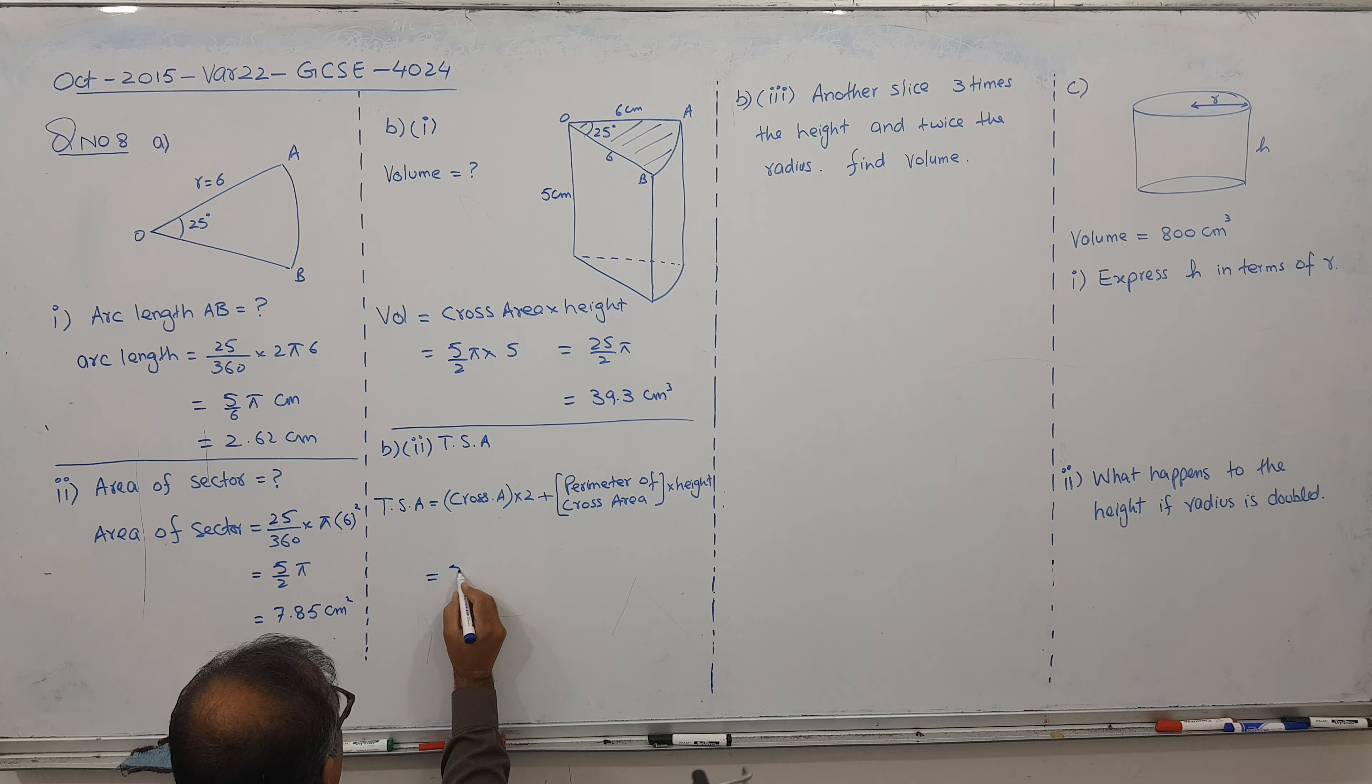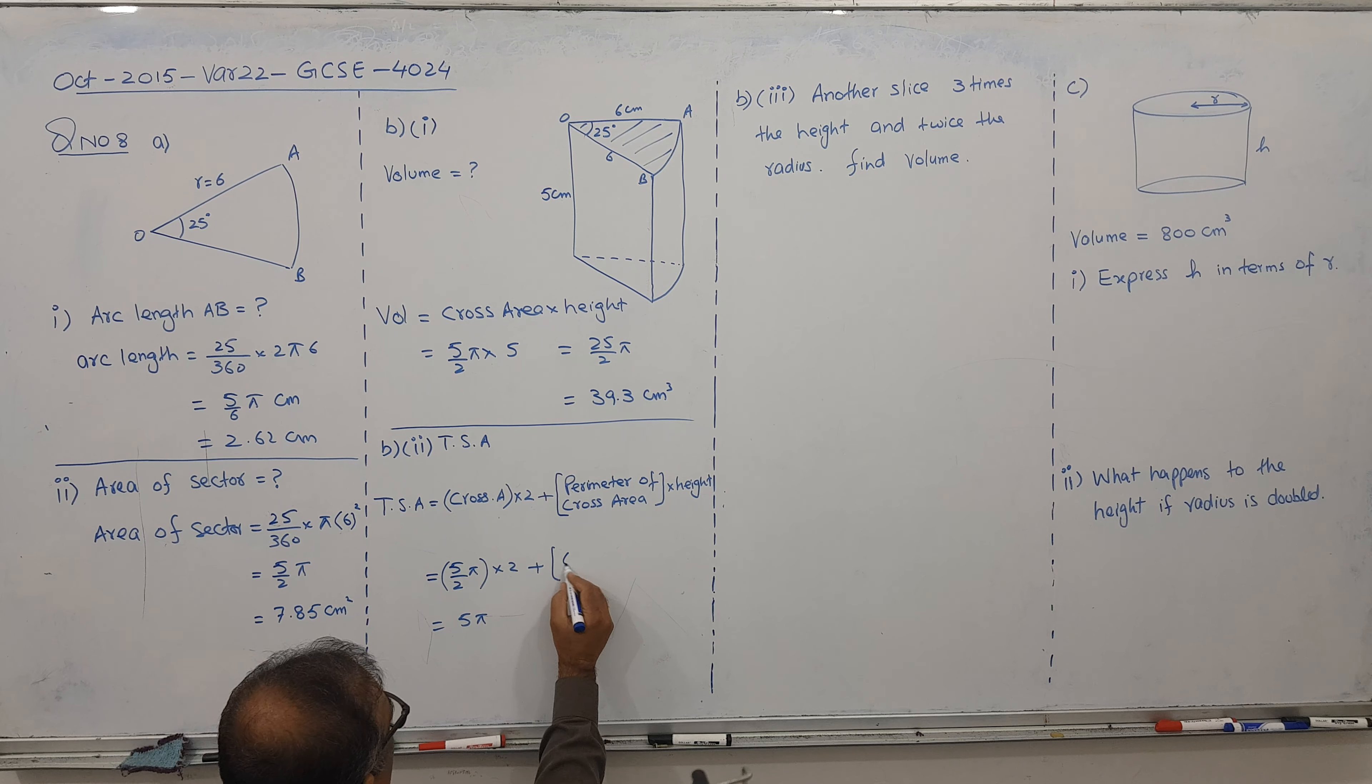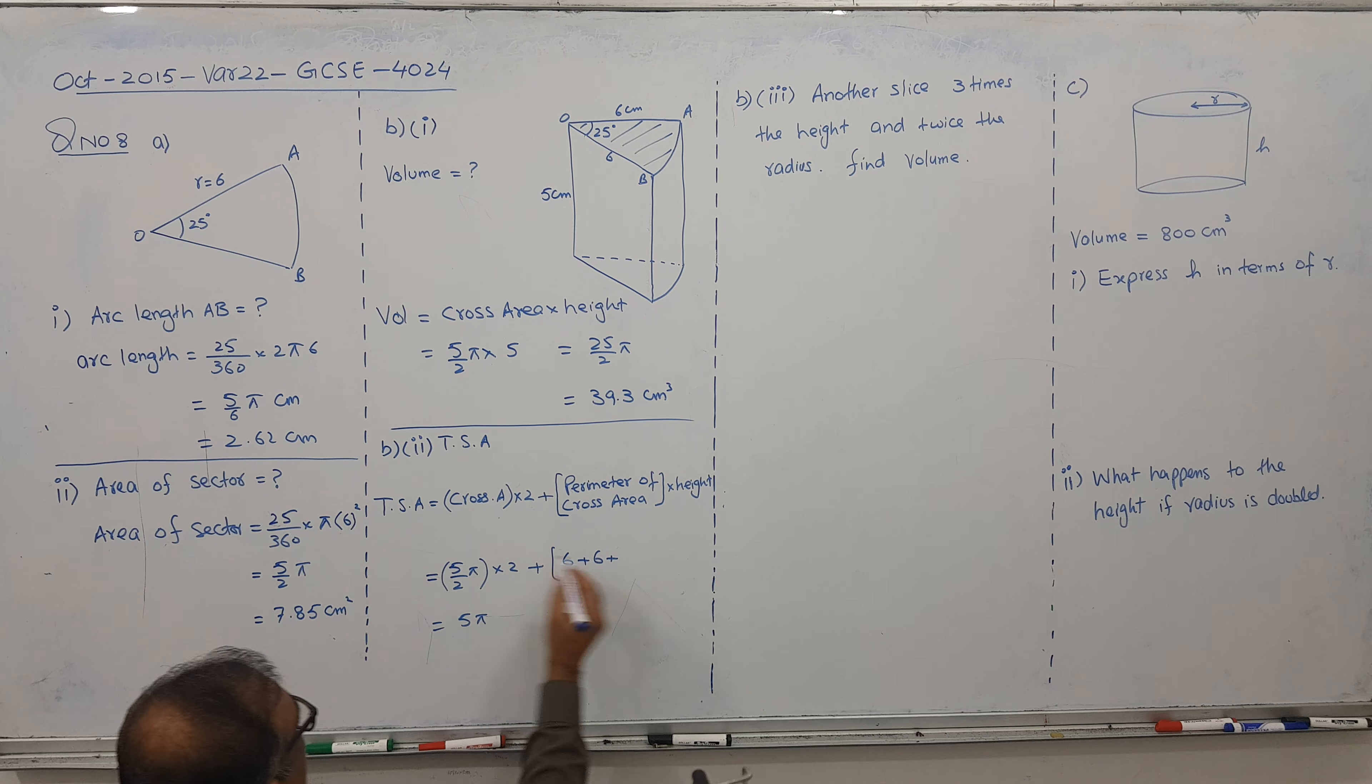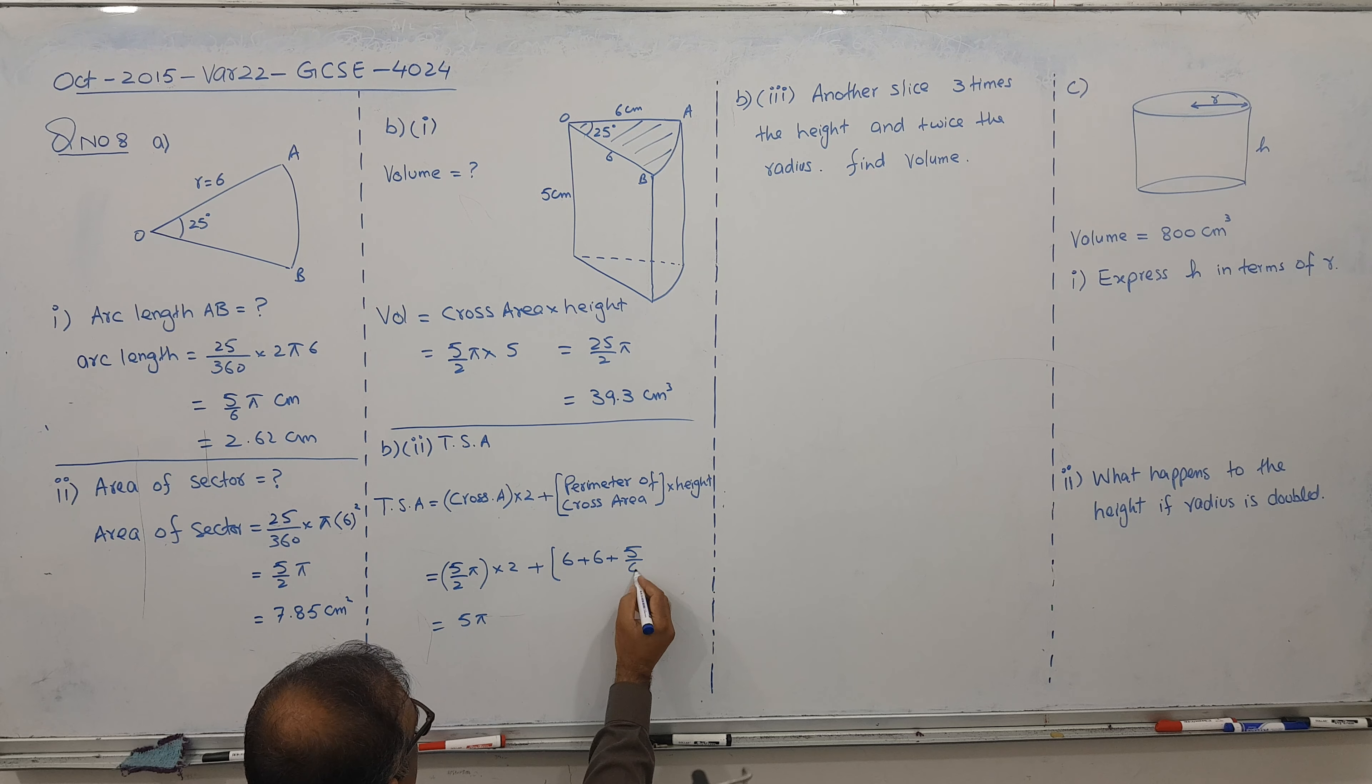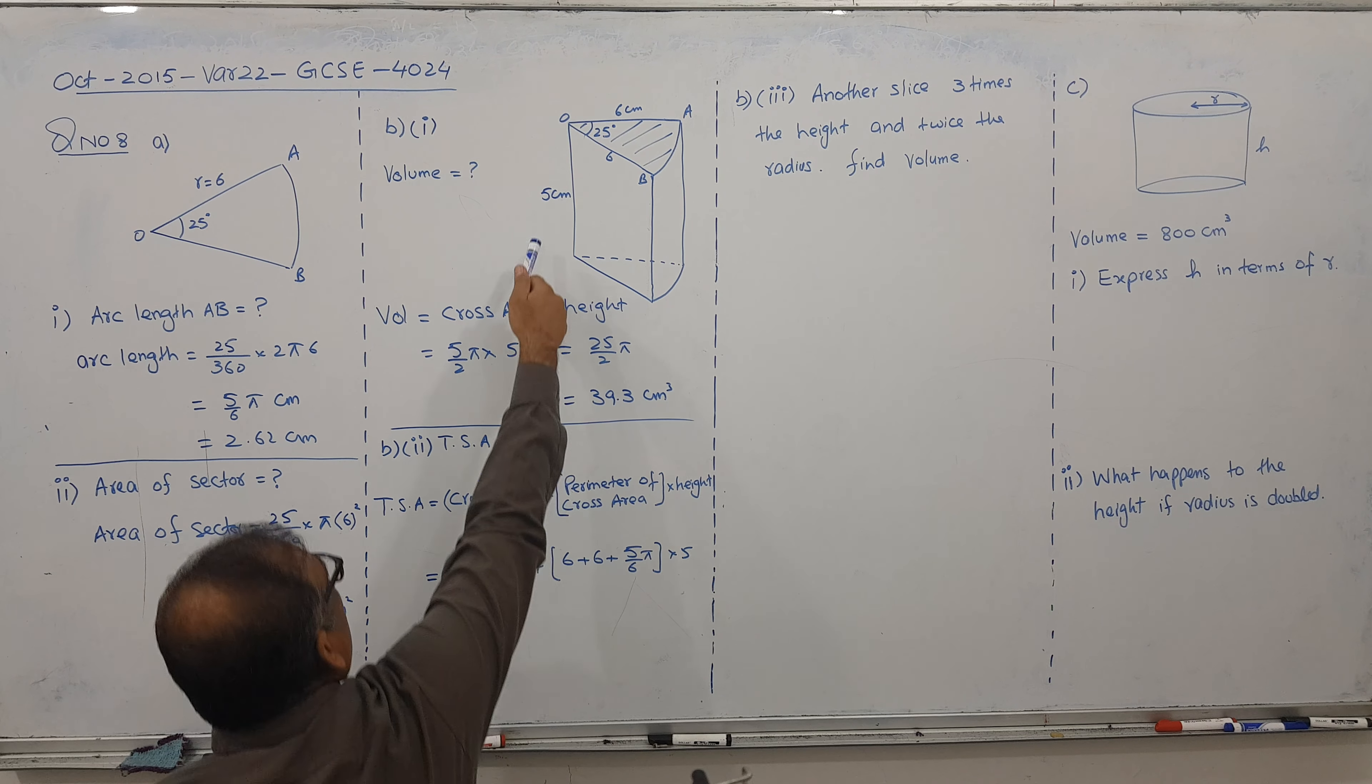So 5 by 2 pi times 2. 2 cancel. I get 5 pi from here. Now perimeter of cross area. 6 come twice. And arc length AB is 5 by 6 pi. And height is 5. Height of the slice.